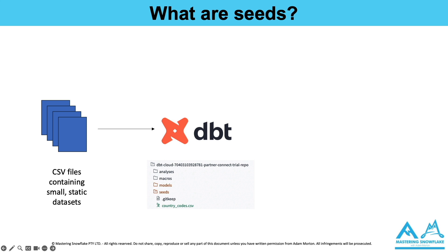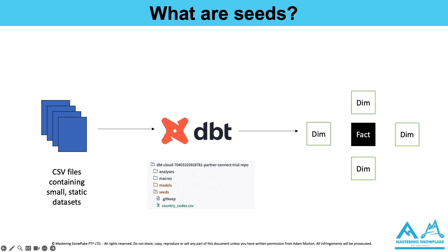Once you've got your reference data as a seed stored within your dbt project, you can deploy that out to Snowflake, Redshift, or Google BigQuery into your relevant downstream tables, potentially into a dimension. A common use case is to have standardized hierarchies, for example, which are used across the business and that data may not exist in a source system. All the data is coming from multiple source systems and you need to standardize it. So that's what seeds are.